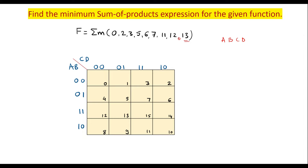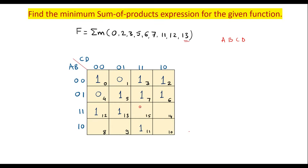Draw the 4-variable Kmap with 4 rows, 4 columns, and 16 cells numbered 0–15. Place 1s at cells 0, 2, 3, 5, 6, 7, 11, 12, and 13; fill remaining cells with 0s.